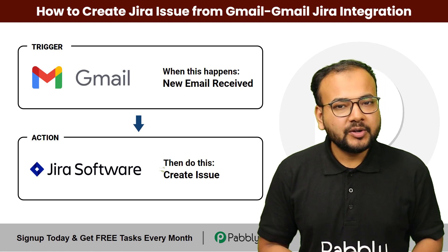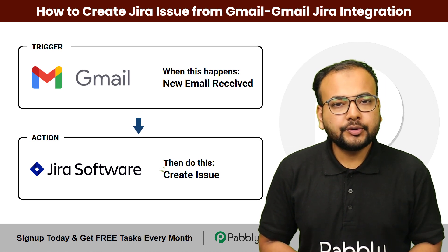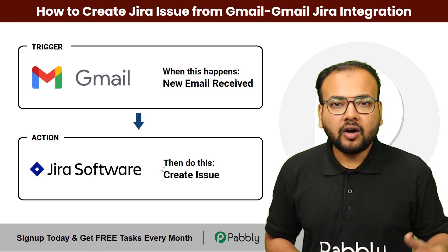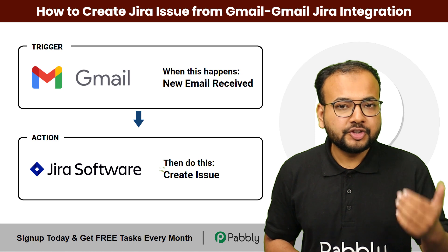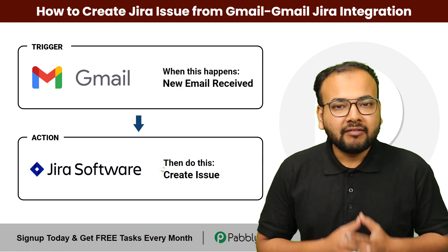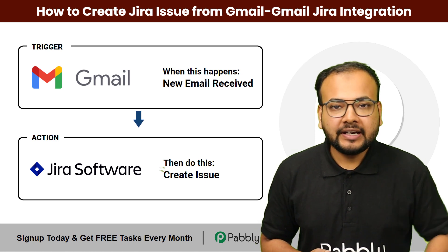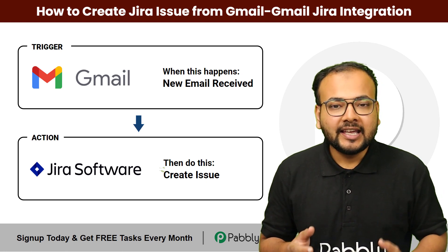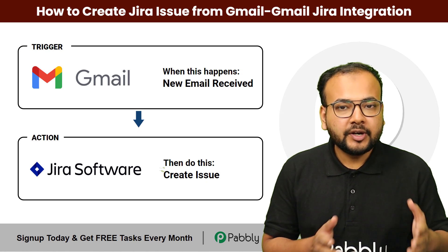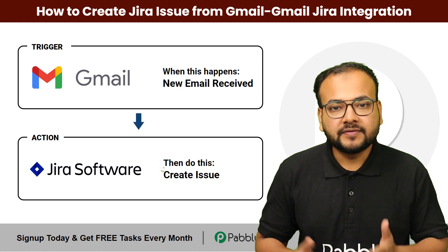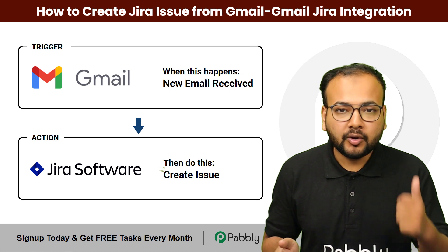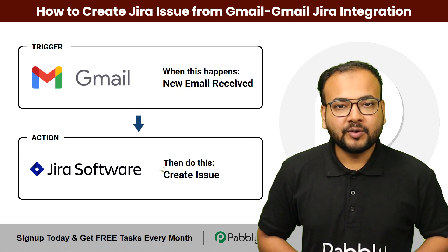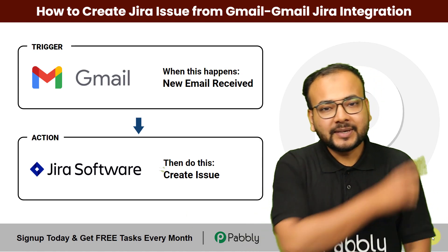Welcome back. In this video, I'm going to show you an automation which is going to create issues in Jira automatically from the data of your incoming emails from your Gmail inbox. So say goodbye to the manual hassle of switching between different windows and applications to create issues in Jira. To create this automation you need to integrate your Gmail inbox with Jira, and I'm going to show you how to do that without any coding — just a few clicks. Stay tuned, let's begin.